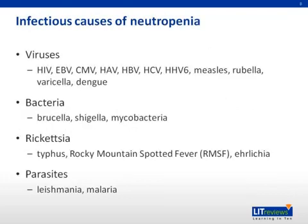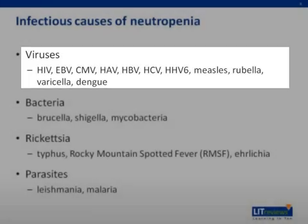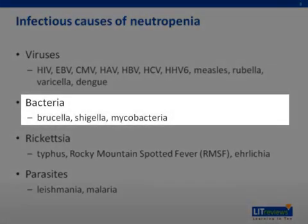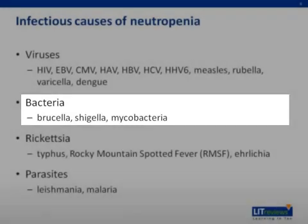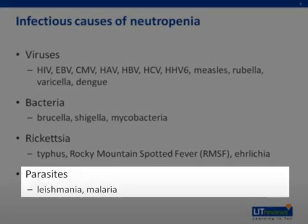Although infections typically cause leukocytosis and an increase in neutrophils, many viruses such as HIV, EBV, CMV, the hepatitis viruses, HHV-6, measles, rubella, varicella, and dengue can all cause neutropenia. Neutropenia can also be seen in bacterial infections, particularly with brucella, shigella, and mycobacteria, as well as in rickettsial diseases such as typhus, Rocky Mountain spotted fever, and ehrlichia, as well as parasitic diseases such as Leishmania and malaria.